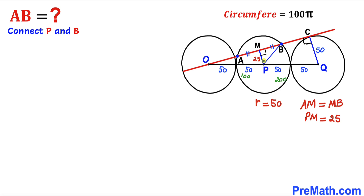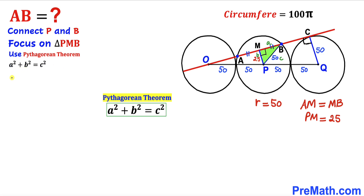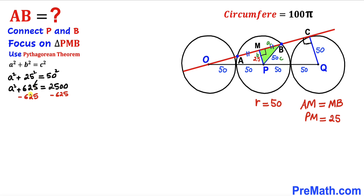Next, connect center P to point B, forming right triangle PMB. PB is the radius = 50. Applying the Pythagorean theorem with hypotenuse PB: A² + 25² = 50². This gives A² = 2500 − 625 = 1875.